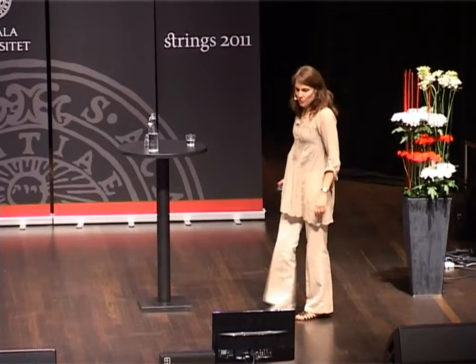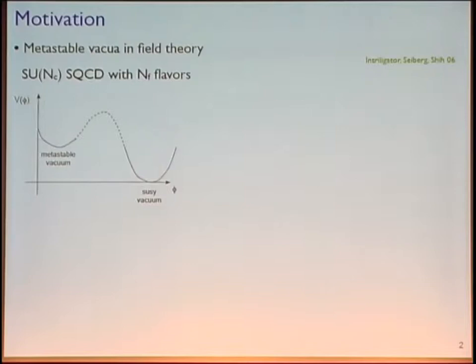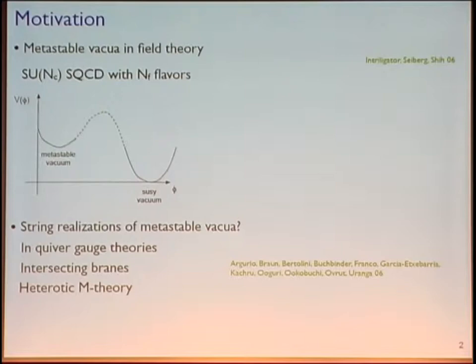The motivation is obviously the work by Intriligator, Seiberg, and Shih, who found that in rather simple gauge theories like SU(N) SQCD with N_F flavors, these theories have metastable vacua. And if these metastable vacua are sufficiently long-lived, then maybe we are just living in one of them.